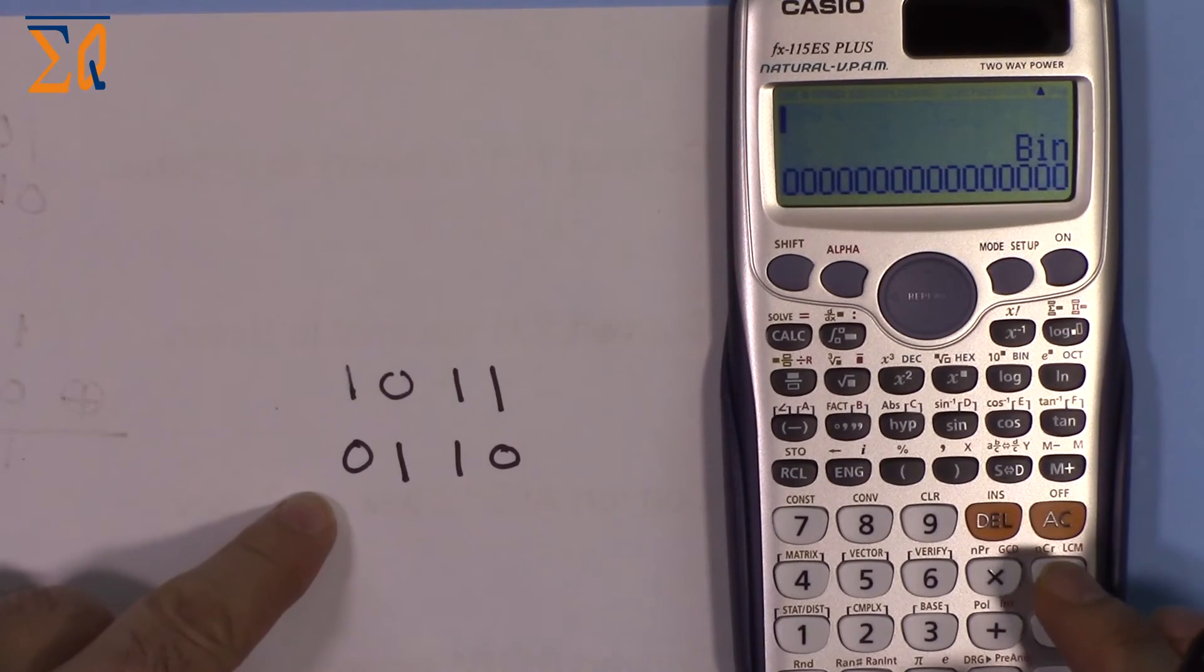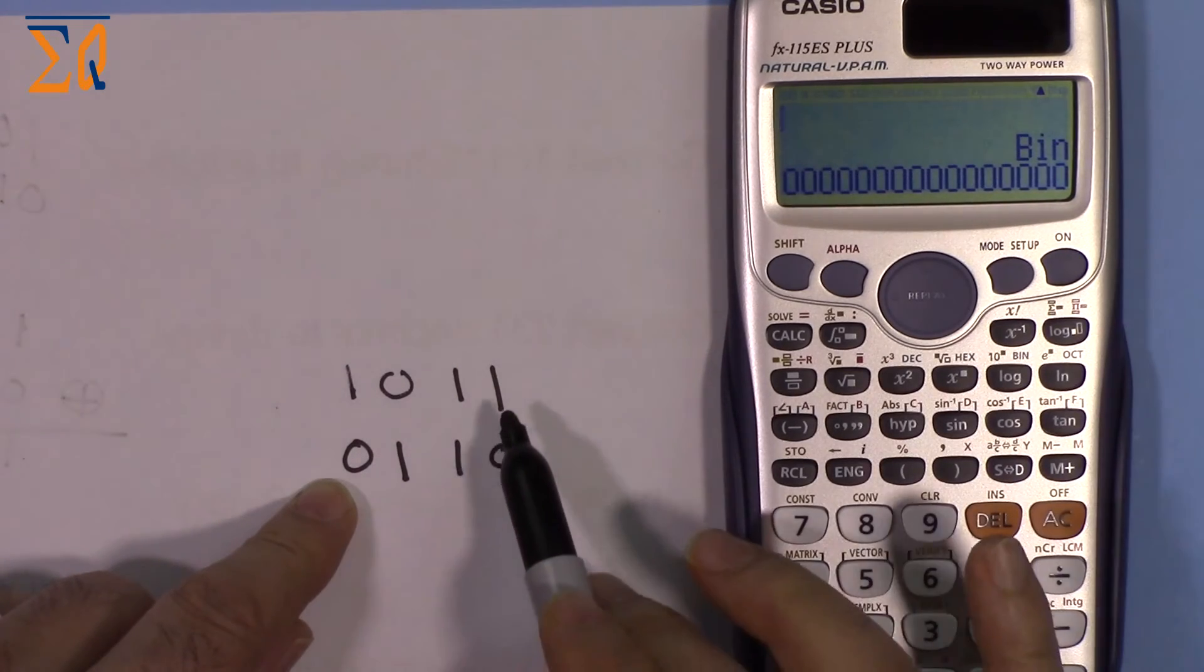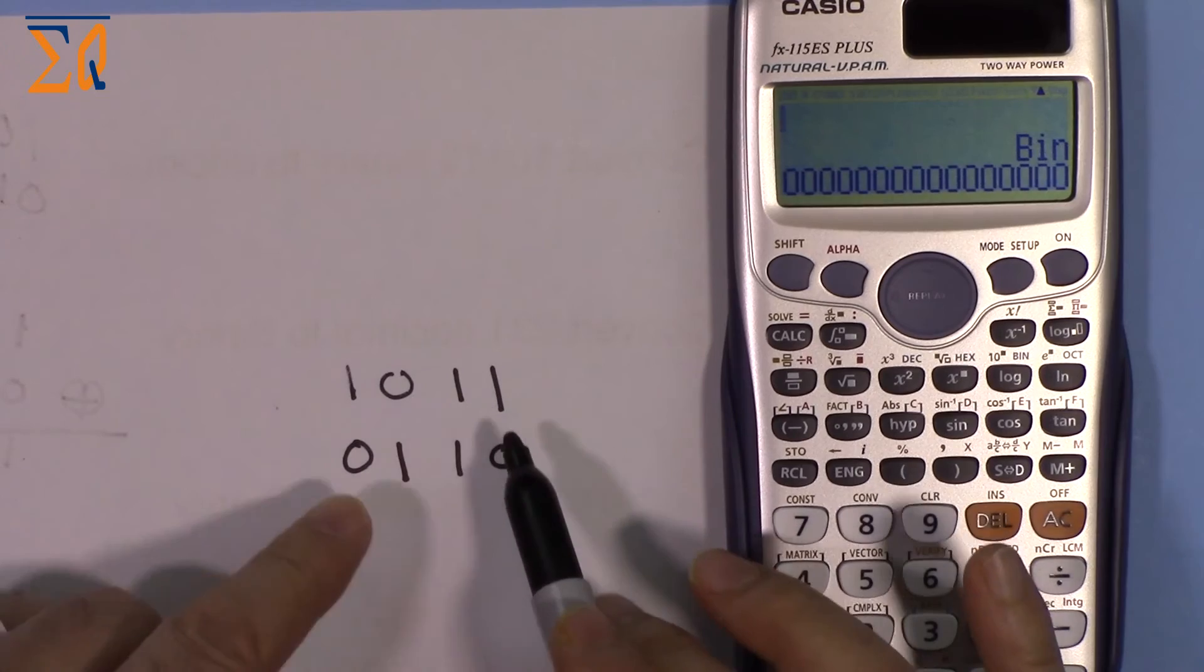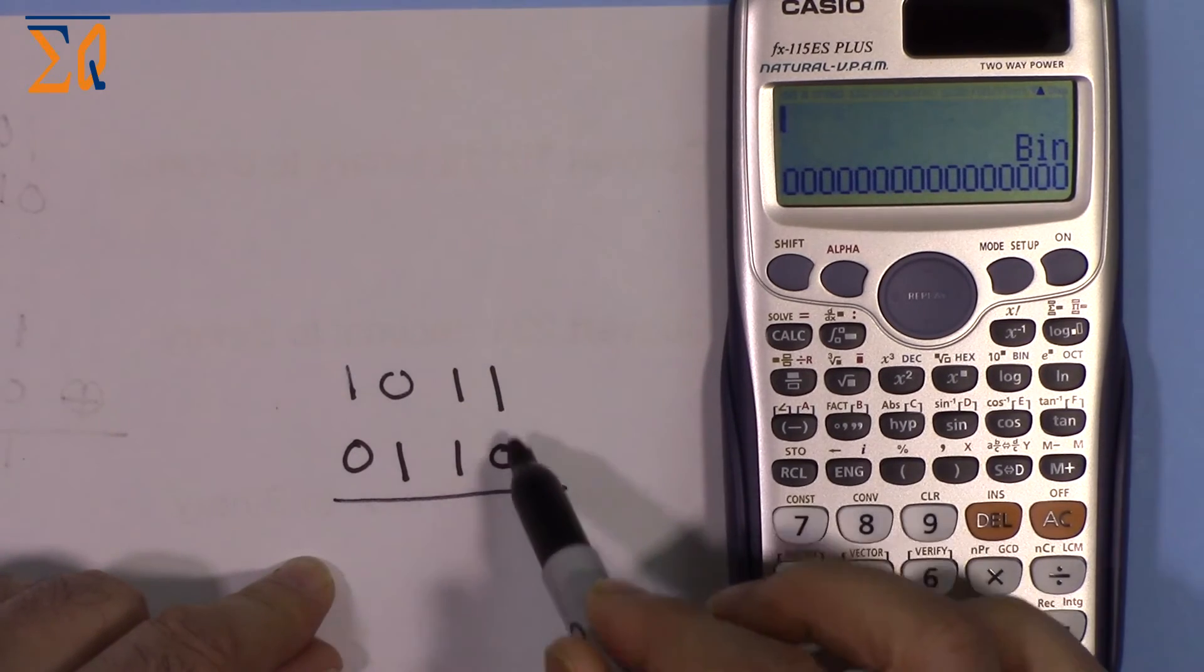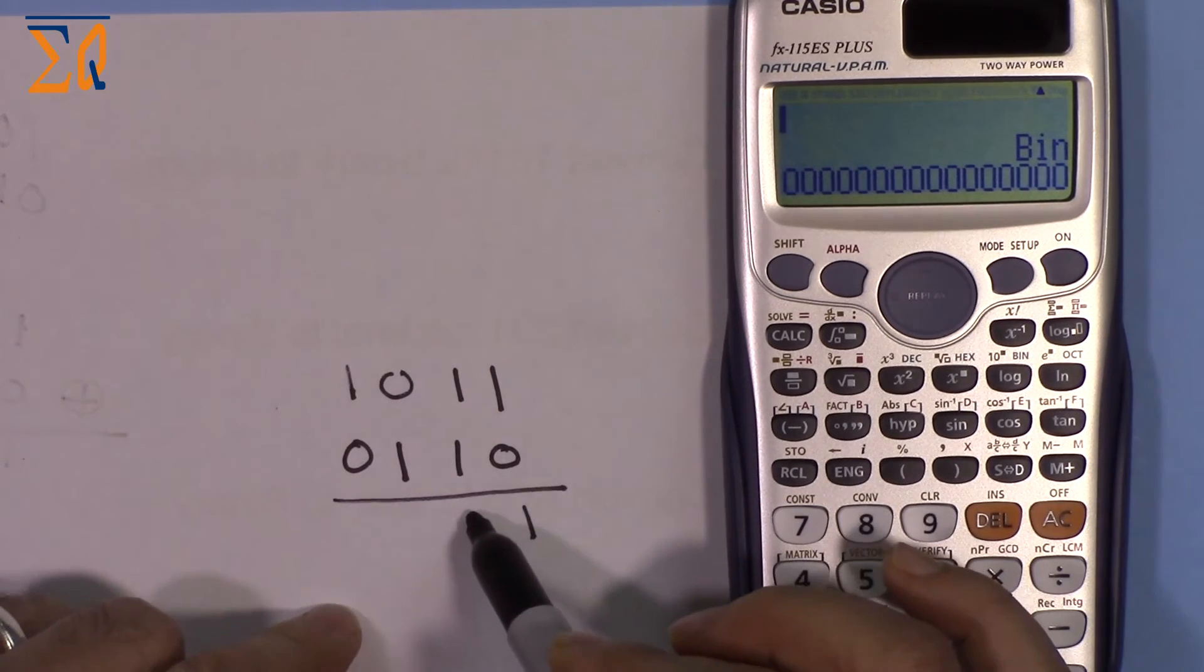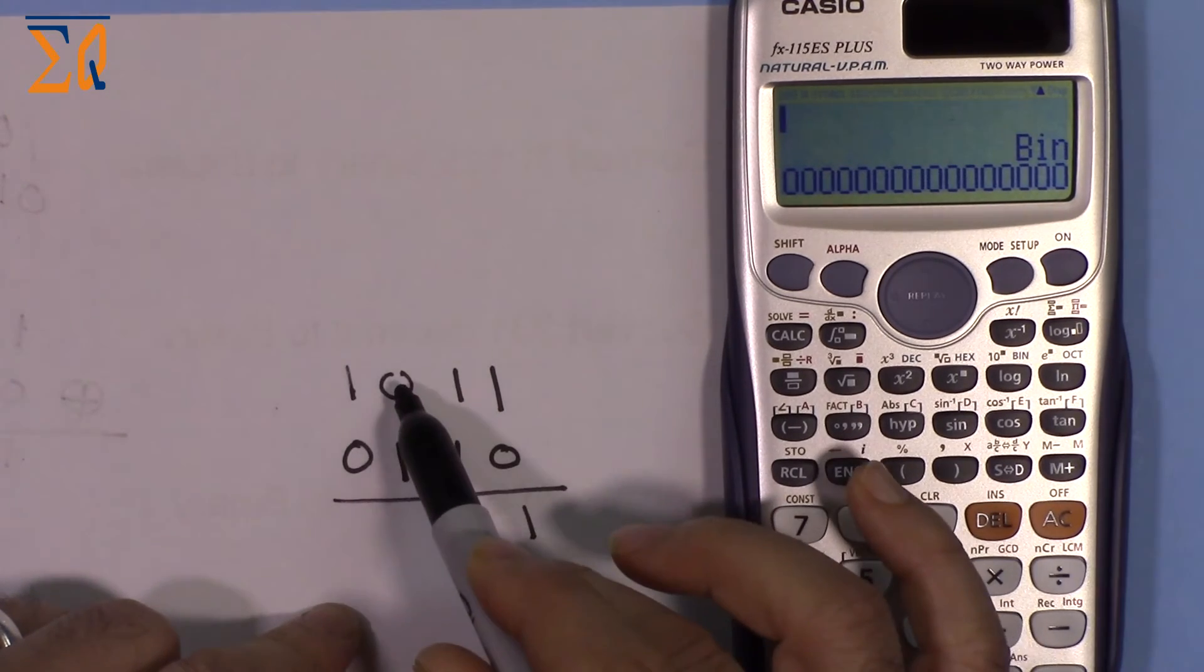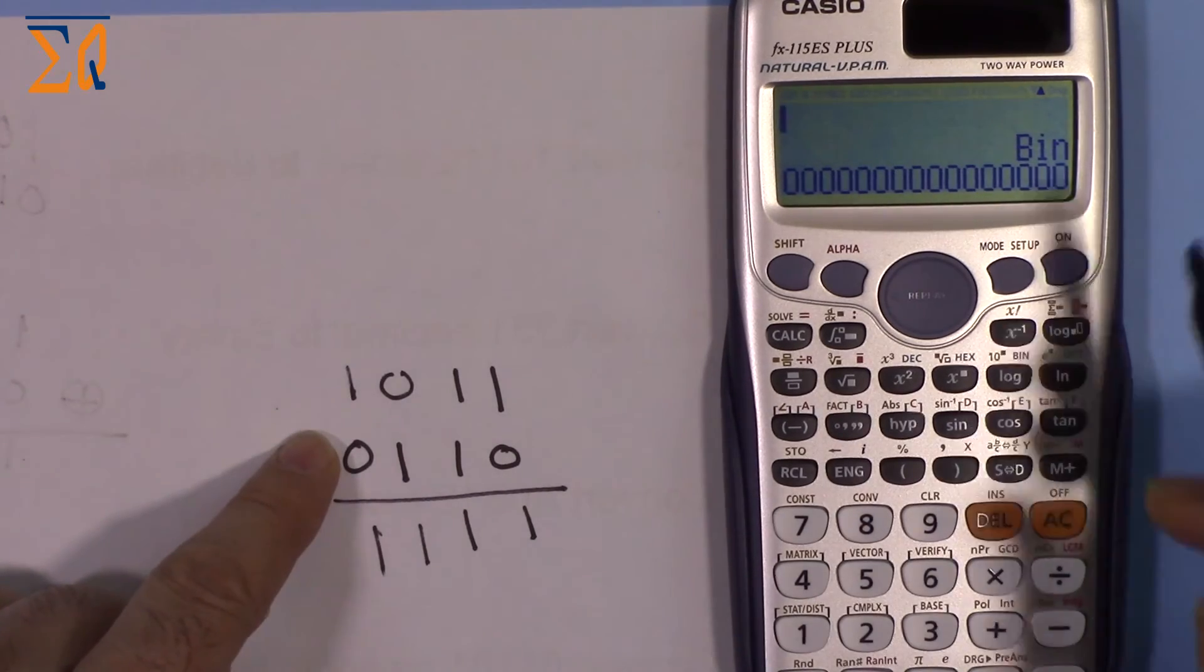Let's do the OR operation for these two values. For OR, if either bit is 1, the answer is 1. So we expect 1, 1, 1, 1.